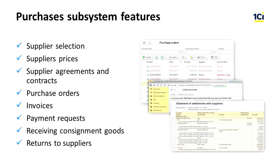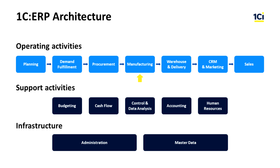Let's look at the key features of the purchaser subsystem. In the purchaser subsystem, you can select a supplier for specific goods, store and monitor supplier prices, and keep supplier agreements and contracts. With this subsystem, you keep records for purchase orders and process supplier invoices. Based on the invoices received from suppliers, you create payment requests. Moreover, in the purchasing subsystem you can process consignment goods received from a principal and issue documents for the goods return.